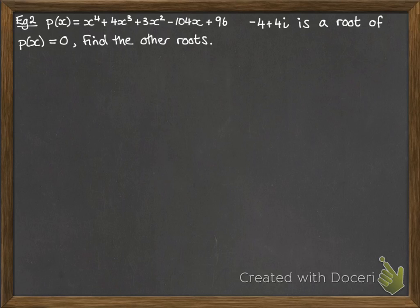This one, we're given a polynomial. We're told that minus 4 plus 4i is a root of that polynomial equal to 0, and we want to find the other roots. So here we have a polynomial of order 4. Since minus 4 plus 4i is one of the roots, we can straightaway write down one of the other roots, which is the conjugate.